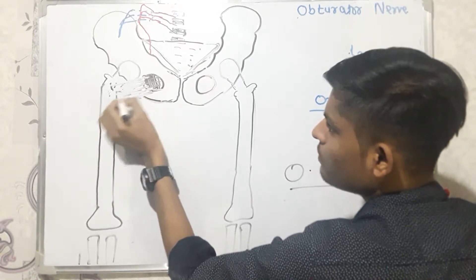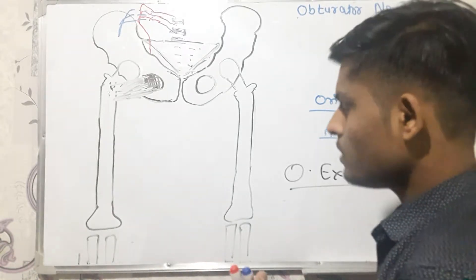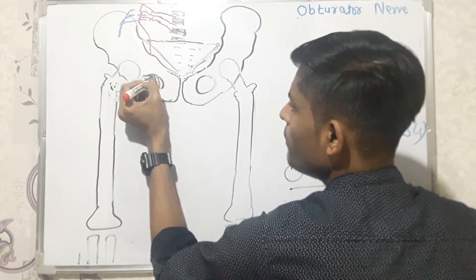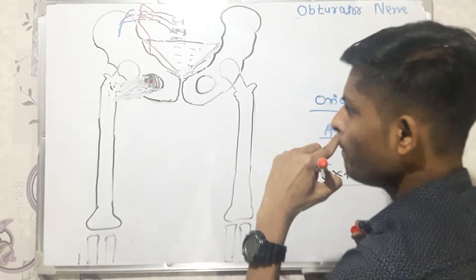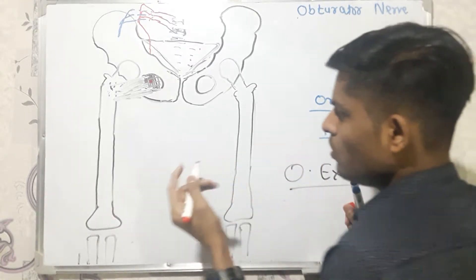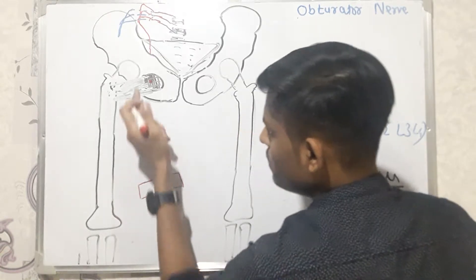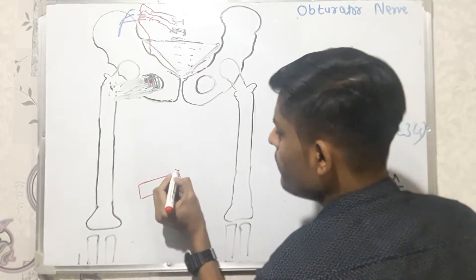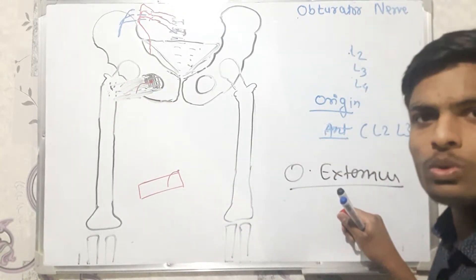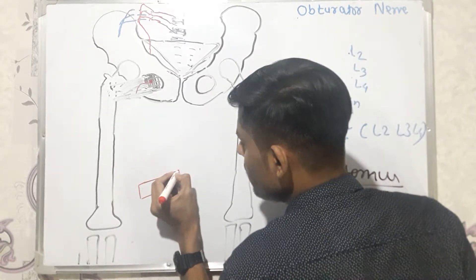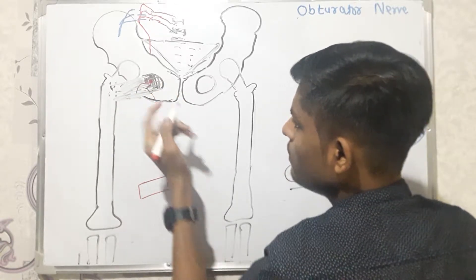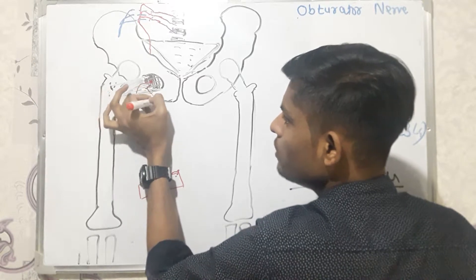After the obturator nerve pierces the obturator membrane, it divides into two divisions: an anterior division and a posterior division. The anterior division lies anterior to the obturator externus muscle. The posterior division actually pierces the obturator externus muscle and then runs medially. These are the two main branches of the obturator nerve.